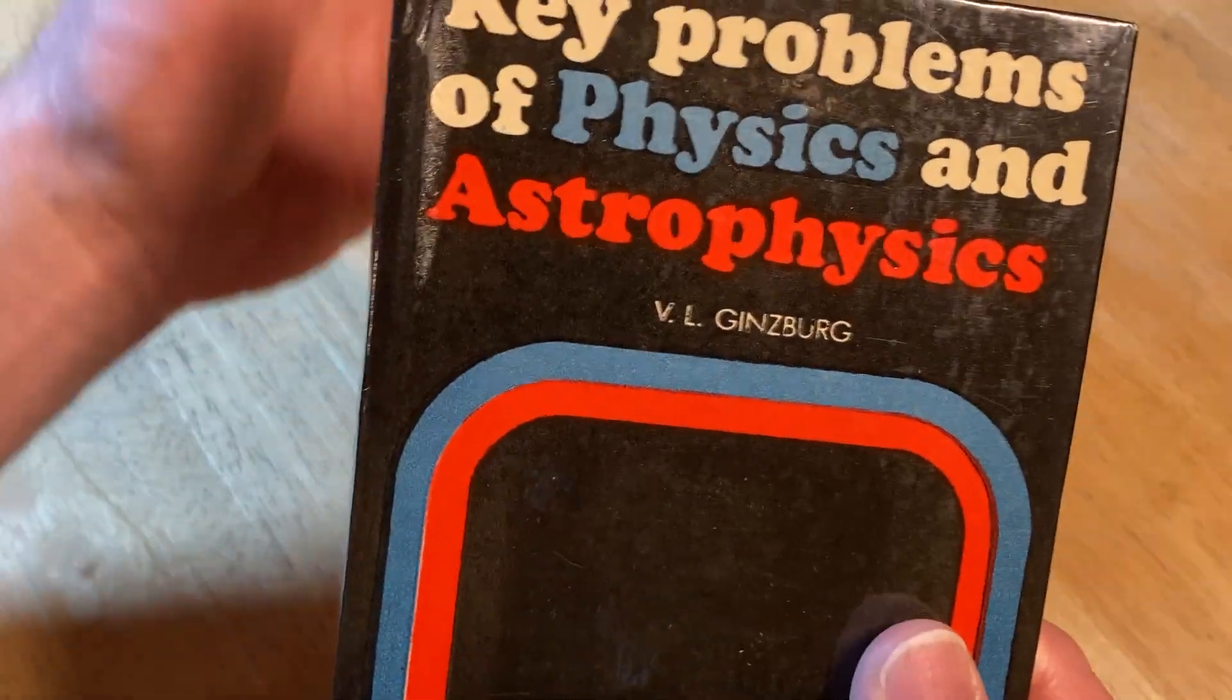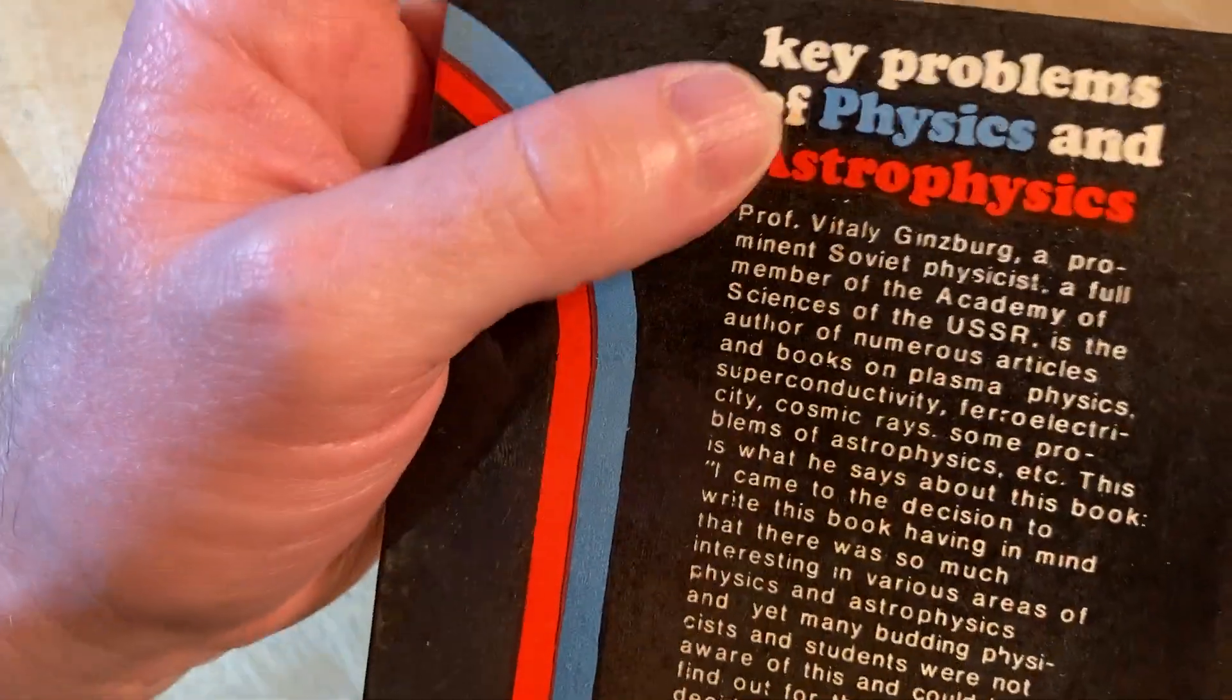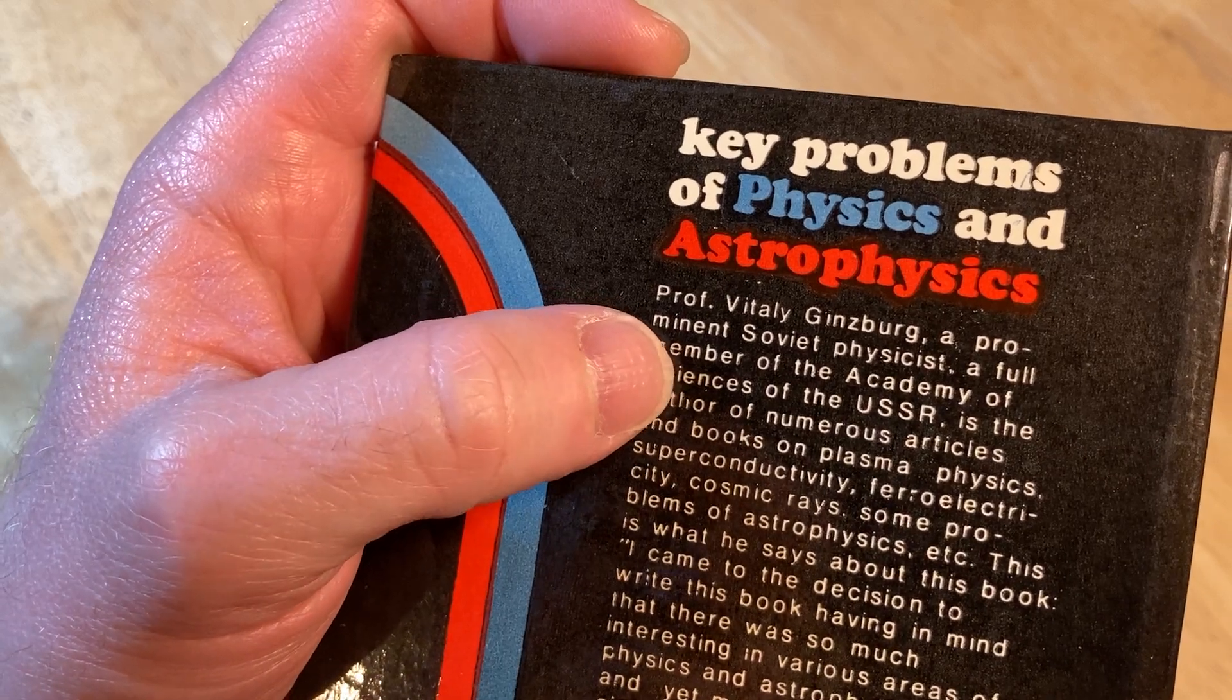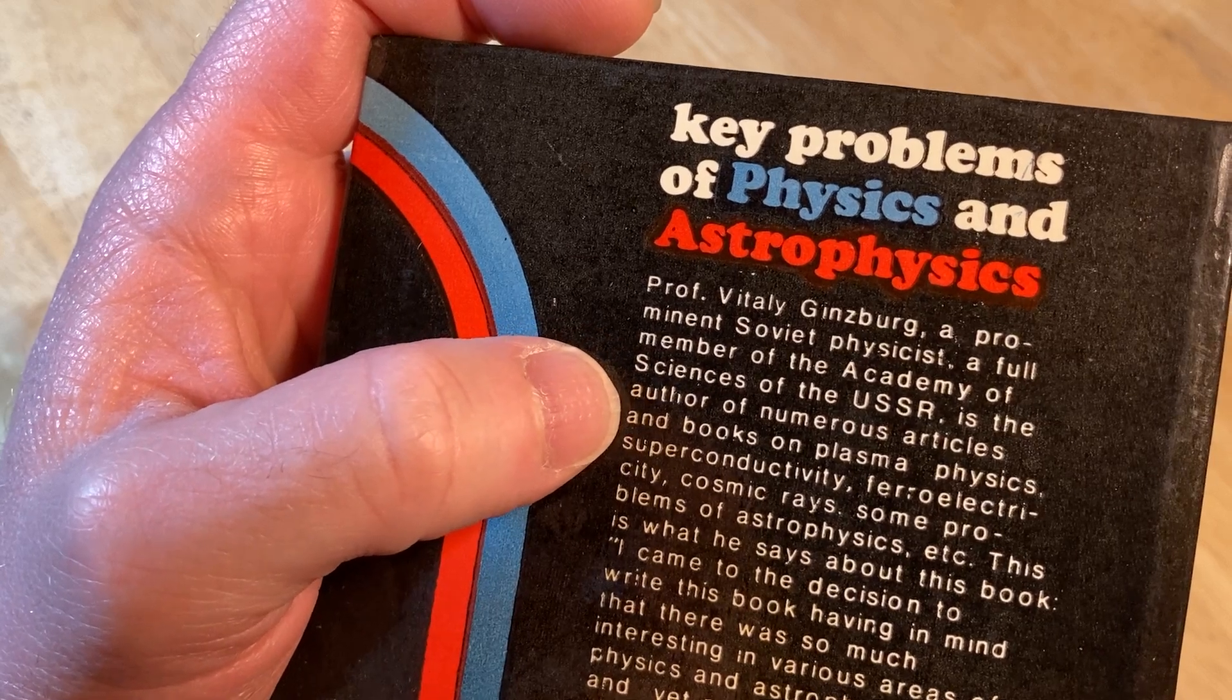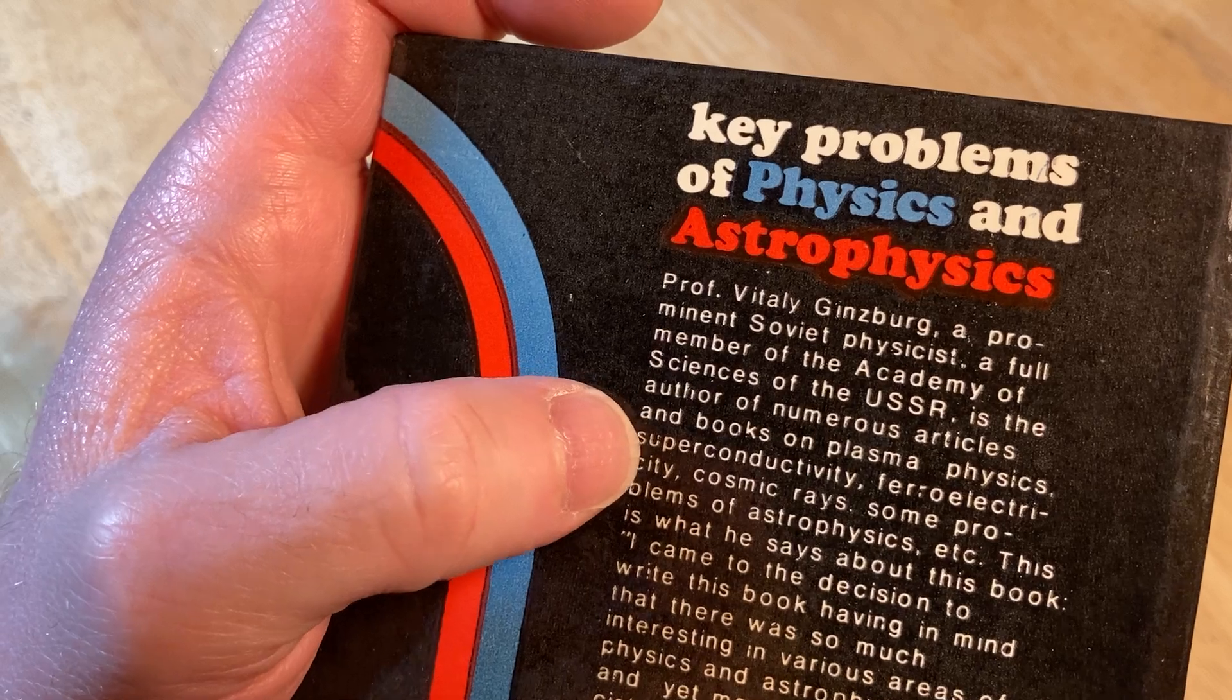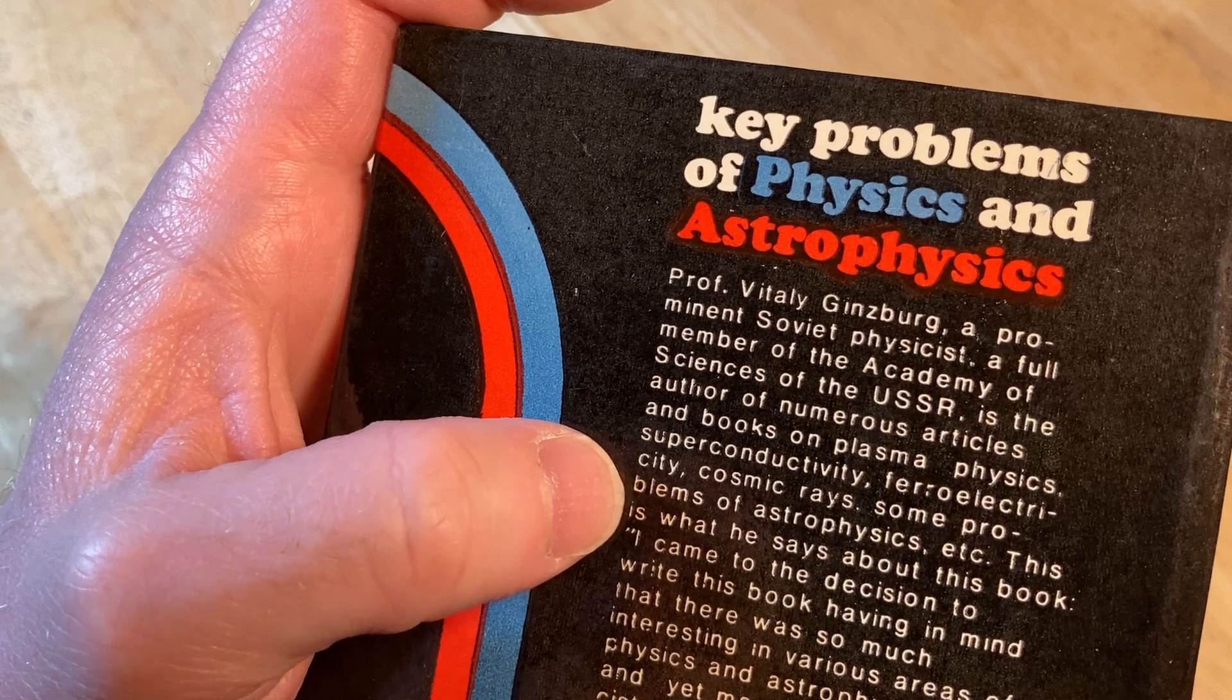They would take Russian books and translate them to multiple languages, and they would be used all over the world. This one is in English, obviously, and we're going to take a look at it in this video. Here it talks a little bit about the book. It says, Professor Vitaly Ginsberg, a prominent Soviet physicist, a full member of the Academy of Sciences of the USSR, is the author of numerous articles and books on plasma physics, superconductivity, ferroelectricity, cosmic rays, some problems of astrophysics, etc.